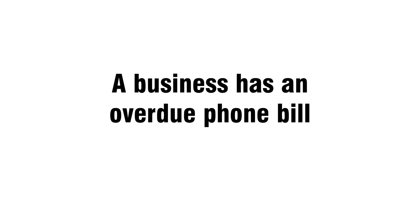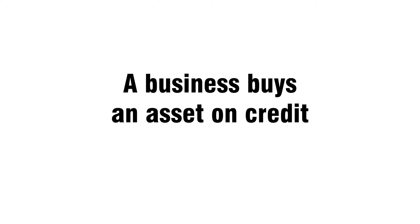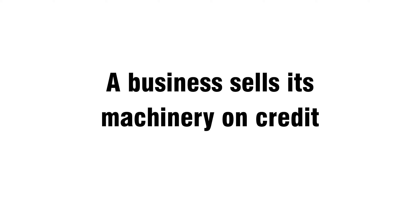Activity fifteen: a business has an overdue phone bill. Accrued expense phone account. Activity sixteen: a customer pays for goods in advance. Prepaid revenue account. Activity seventeen: a business buys an asset on credit. Accounts payable account. Activity eighteen: a business sells its machinery on credit. Accounts receivable account.